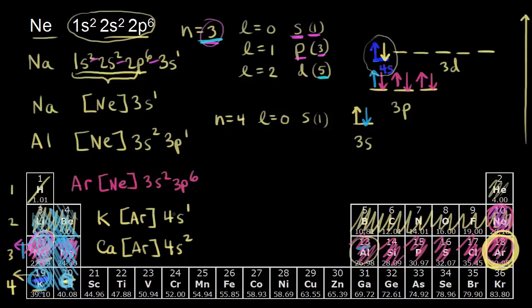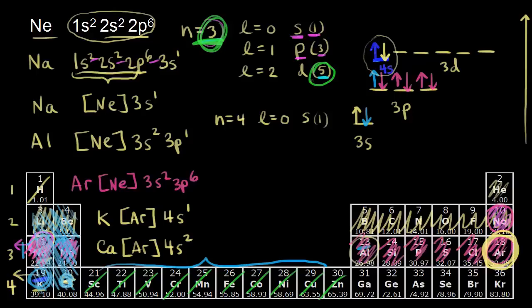The next elements you'll hit are all of these in the middle — the d-block. We know that in the third energy level there are d orbitals. There are five d orbitals, each holding a maximum of two electrons, so five times two is ten — ten spots total. I'm going to do a whole separate video on d orbitals, so I won't go into great detail right now. But 3d10 would fill these d orbitals, and this is why the periodic table is shaped the way it is — it helps you think about writing electron configurations.